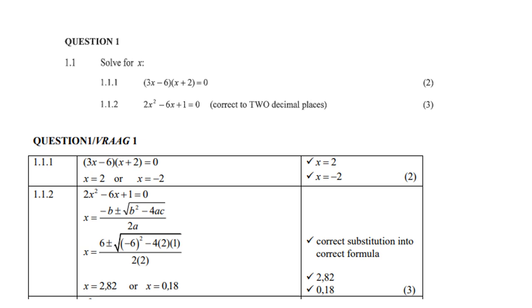And then you remember you must round off to two decimals, so x is 2.82 or x is 0.18. Take note the mark allocation: you get one mark for correct substitution and then one mark for each answer.